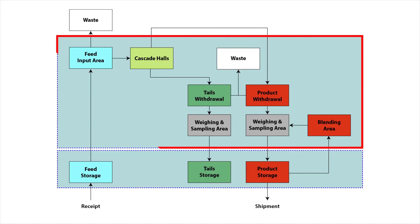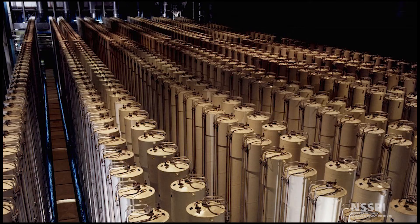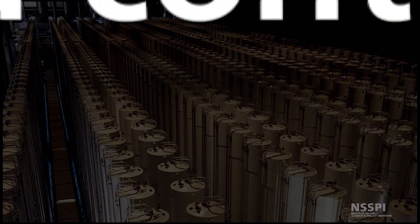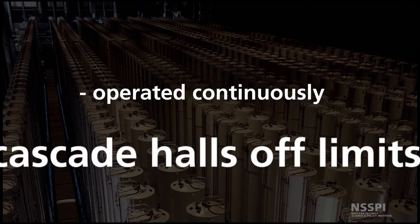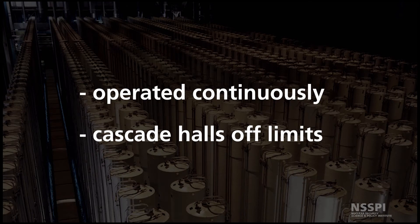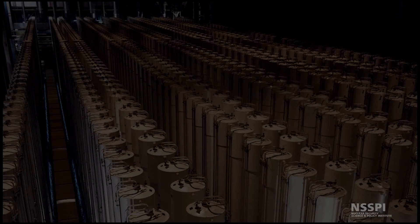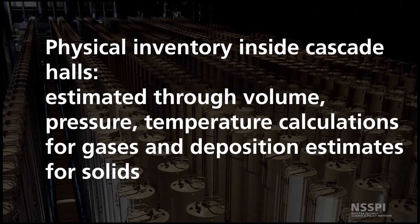Performing a physical inventory of the cascade halls and process areas is usually not possible because the enrichment equipment must be operated continuously for efficiency of operation, and the cascade halls are usually off limits to inspectors for commercial reasons. As a result, the inventory within certain areas of the facility must be estimated through volume, pressure, and temperature calculations for gases and deposition estimates for solids.